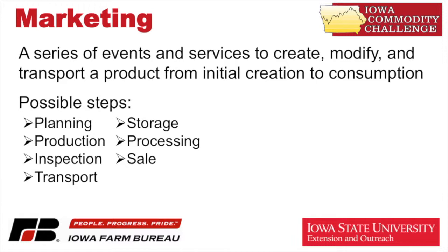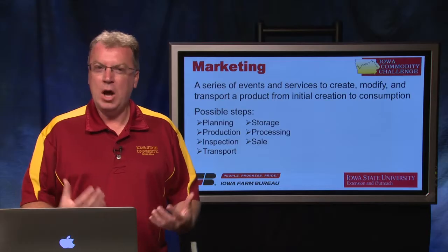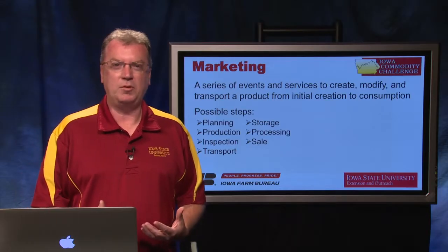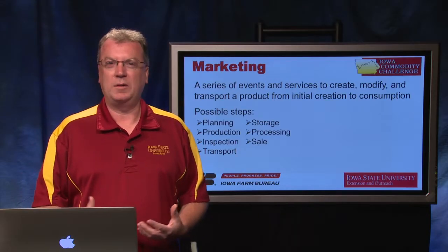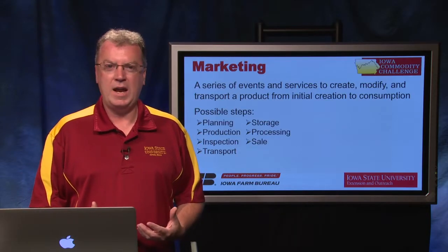We typically think of a sale, but it goes into the planning, the production of the product, the inspection, the transportation of that product, the storage, the processing, and then the final sale. So there are a number of steps when we look at the marketing chain.